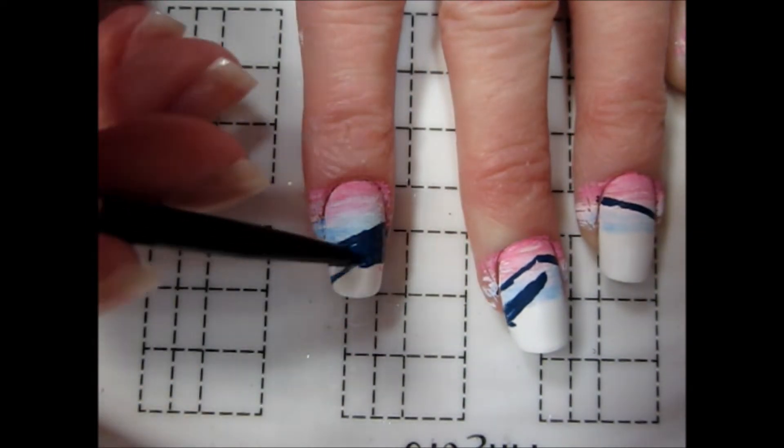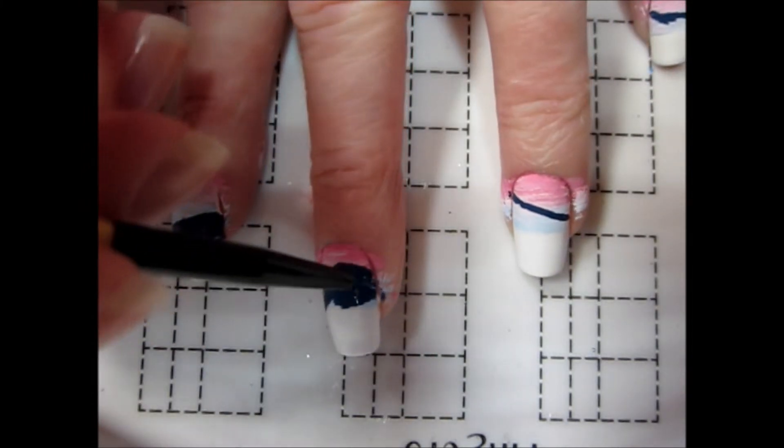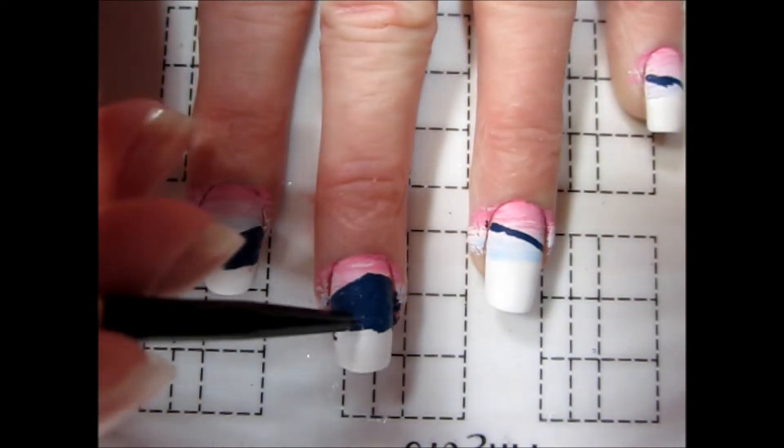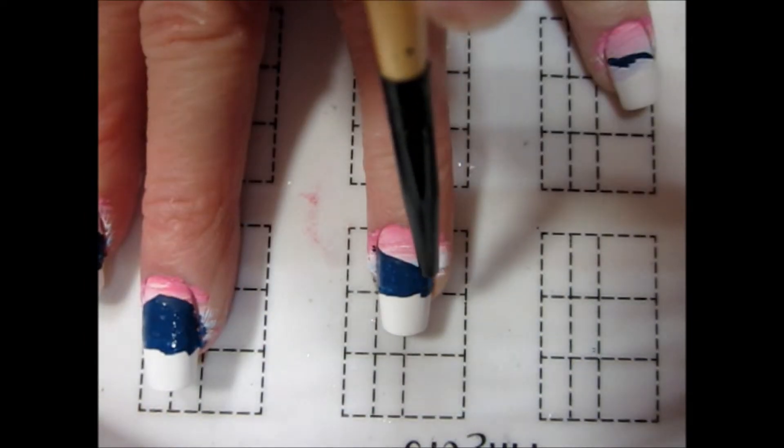I filled in the entire area of each nail where I wanted the mountains with the same dark blue paint. You don't have to worry if the bottoms of the mountain are even or if they extend down too far, because this part will get covered with the next layer of paint anyway.